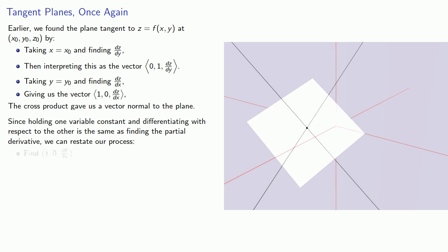First, find the vector (1, 0, ∂f/∂x). Also, we'll find the vector (0, 1, ∂f/∂y).